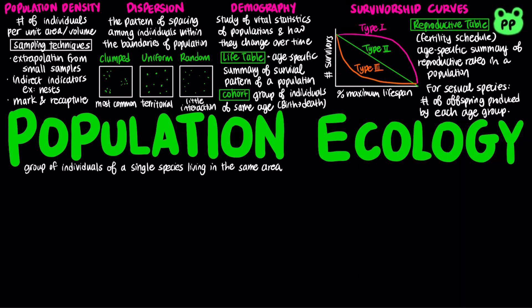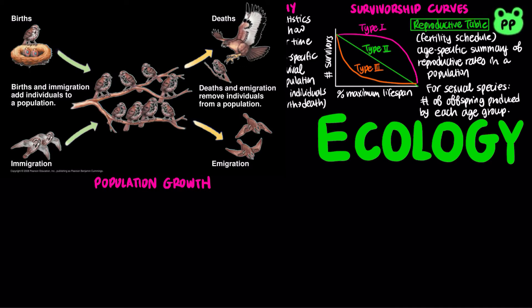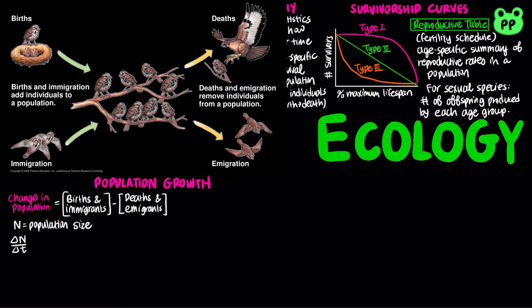It is useful to study population growth in an idealized situation, in which the change in population size equals births plus immigrants entering the population, subtracted by deaths and emigrants leaving the population. For simplicity, the change in population size over a fixed time interval, denoted by ΔN/Δt, equals the number of births minus the number of deaths, ignoring the effects of immigration and emigration.